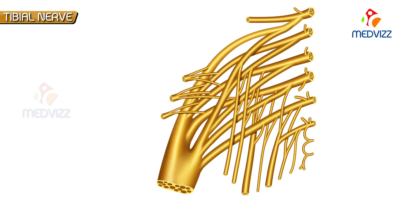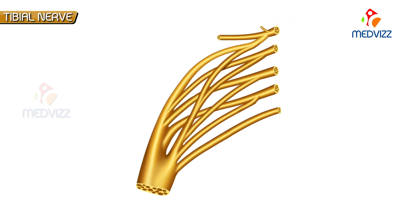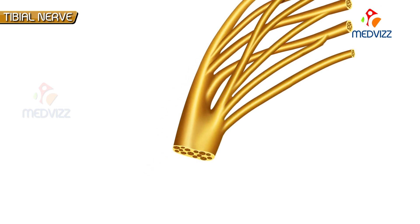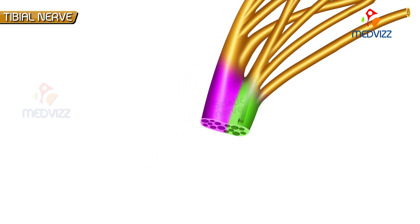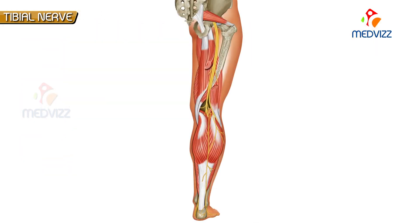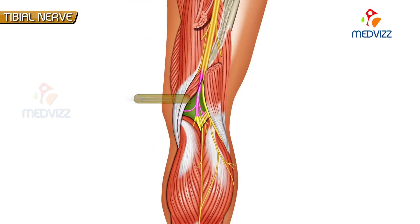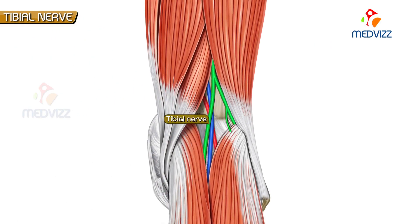The tibial nerve is derived from ventral divisions of ventral rami of L4 to S3 spinal nerves and is a component of the sciatic nerve. It arises as a terminal branch of the sciatic nerve on the back of the thigh, at the junction between the upper two-thirds and lower one-third of the thigh, and enters the popliteal fossa.